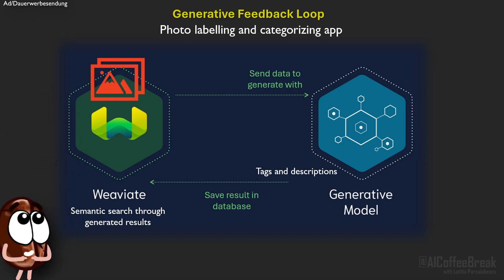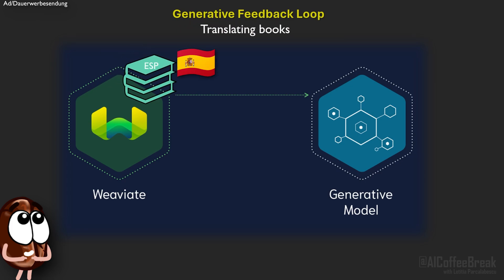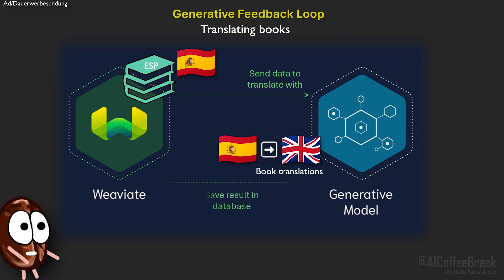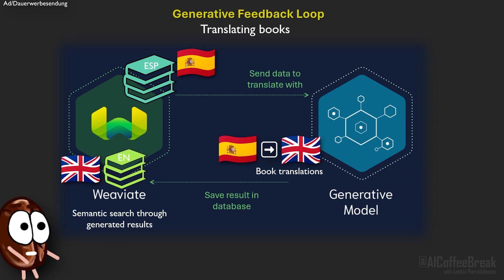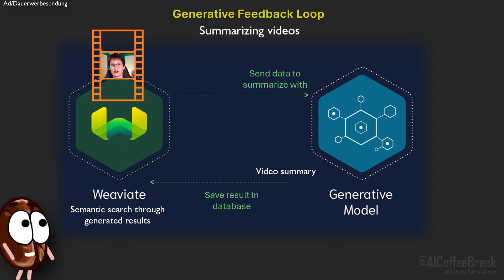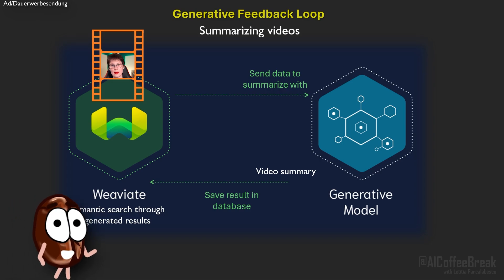Or you want to translate books: if you have a database full of text of technical books in Spanish and you want to use a language model to generate English translations, you can store these translated books in the database and use a powerful English language model to ask about the book content and create learning apps or sell the books. Maybe you want to summarize videos: you can use a language model to summarize the transcript of a video, save the summaries back to the database, and use them along with the user watch history to recommend what videos to watch next.